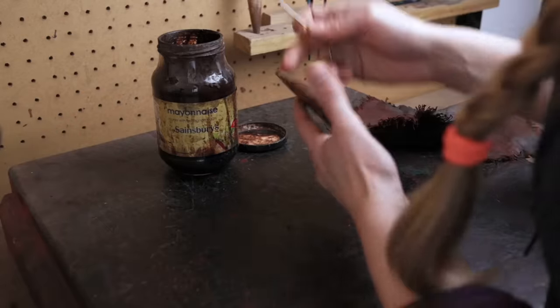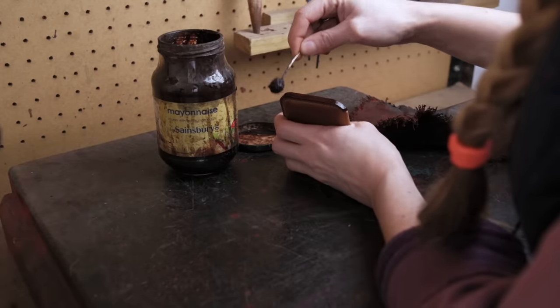And so once you're done with your sanding you can then use some more stain and we're going to restain and polish that bottom edge.